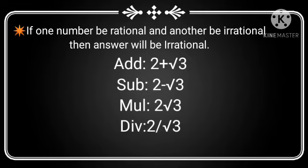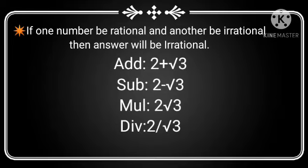Next: if one number is rational and another is irrational, then the answer will always be irrational. When you add: 2 (rational) plus root 3 (irrational) gives 2 plus root 3, which is irrational. Similarly, in subtraction: 2 minus root 3 is also irrational. When we multiply: 2 into root 3, where 2 is rational and root 3 is irrational.